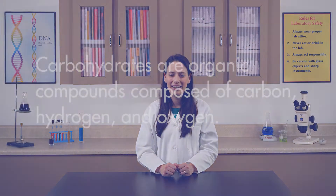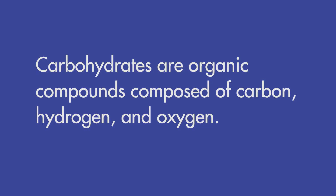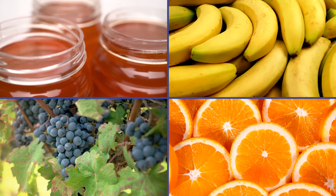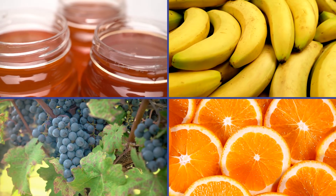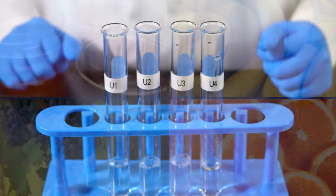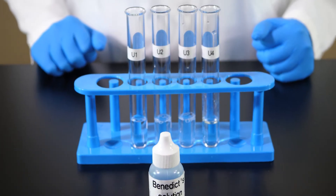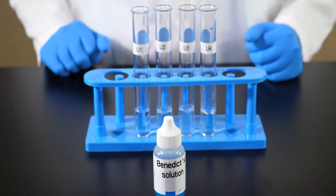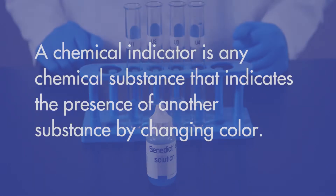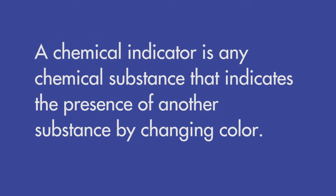Our first two nutrient tests will be for carbohydrates. Carbohydrates are organic compounds composed of carbon, hydrogen, and oxygen. Glucose is a simple carbohydrate found naturally in honey and many fruits. To detect glucose in a solution, we use a chemical indicator called Benedict's solution. A chemical indicator is any chemical substance that indicates the presence of another substance by changing color.